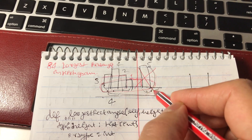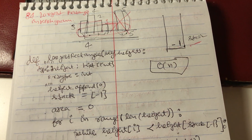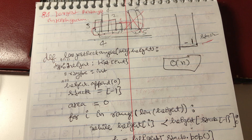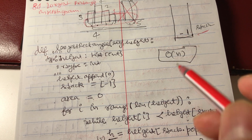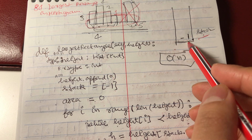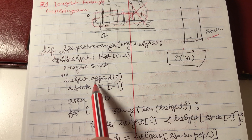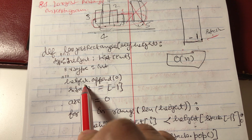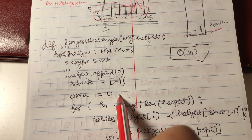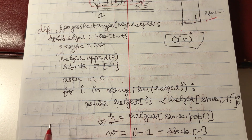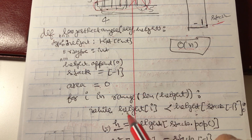We will simplify to just the first four values to make discussion easier. There are many ways to solve this problem, but we will solve it using a stack. We initialize the stack with value -1, append a 0 to the heights list, and initialize the area to 0.